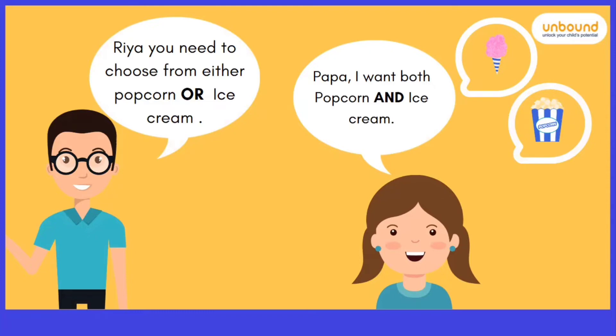But what her father tells her? That Rhea, you need to choose from either popcorn or ice cream. Now father used or. Or in English is used to represent that either you get this thing or this thing. So if you have a choice between two, then you need to choose one. You cannot get both, right?